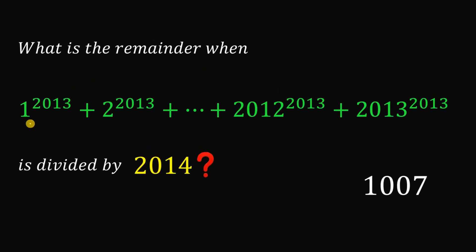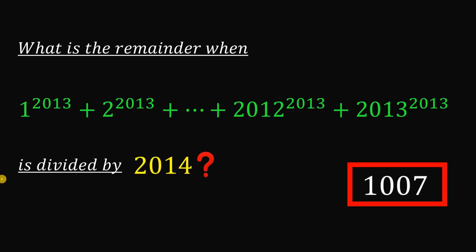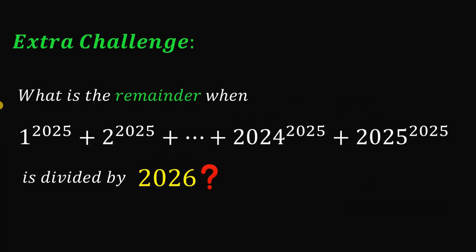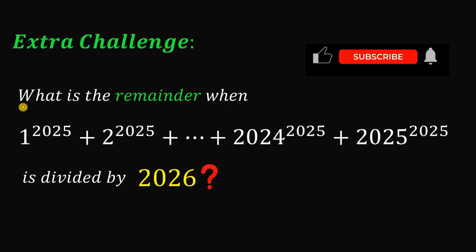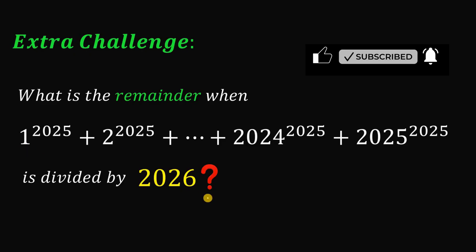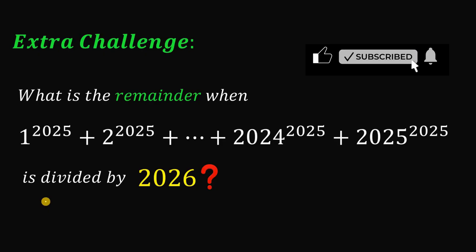So the remainder when this number is divided by 2014 is 1007. Before we end this video, let's have an extra challenge: your goal is to find the remainder when this number is divided by 2026. And as always, we are done.